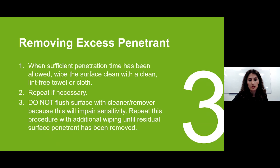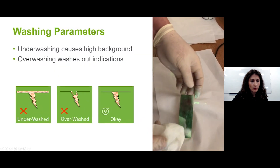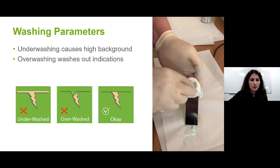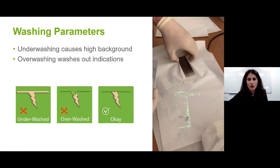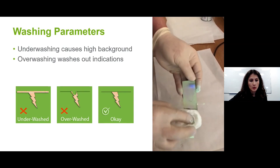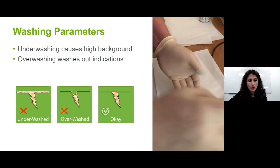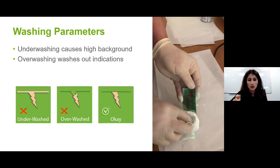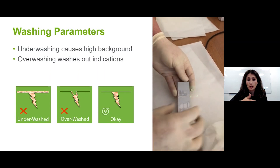If cracks are linear, wipe across the cracks rather than along them. Under-removal of the penetrant can cause streaks of color; over-removal can result in no indications being visible. Washing parameters are pretty picky — like a Goldilocks scenario. Under-washed parts provide no contrast between the developer and the part because penetrant is still on the surface, so you won't see a difference between the surface and a potential indication, causing high background.